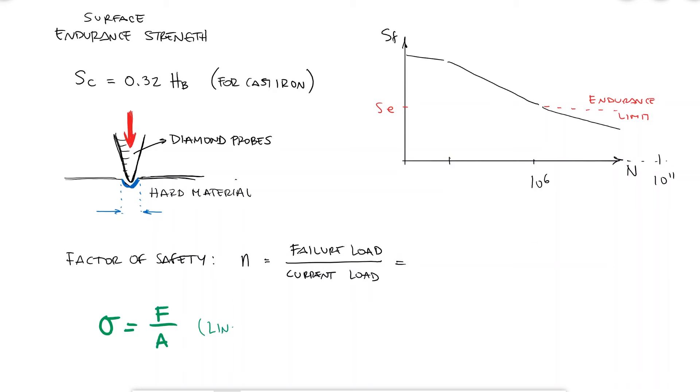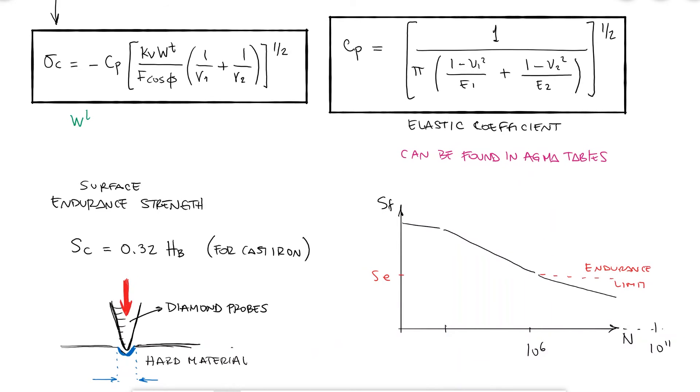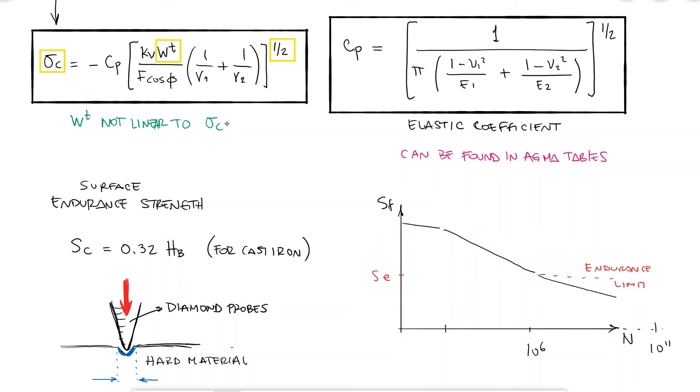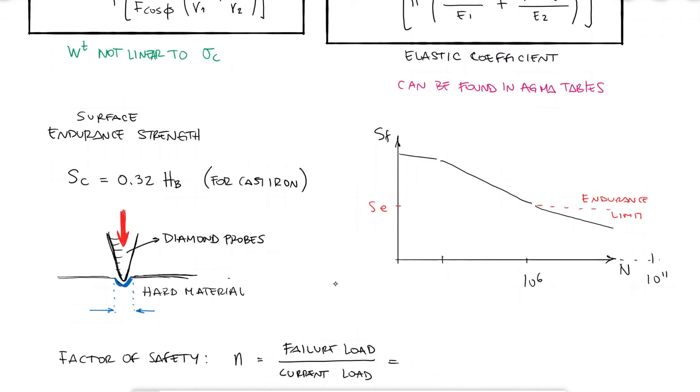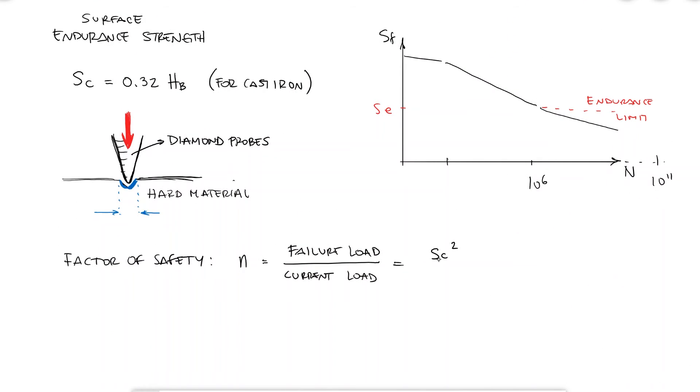Since the loads are usually linear with stress, for example axial load to axial stress, using strength over stress for the factor of safety is the same as load for failure over imposed load for most cases, but not in this case since the stress is not linear with the load. For this reason, the factor of safety is defined as sc squared over sigma c squared.